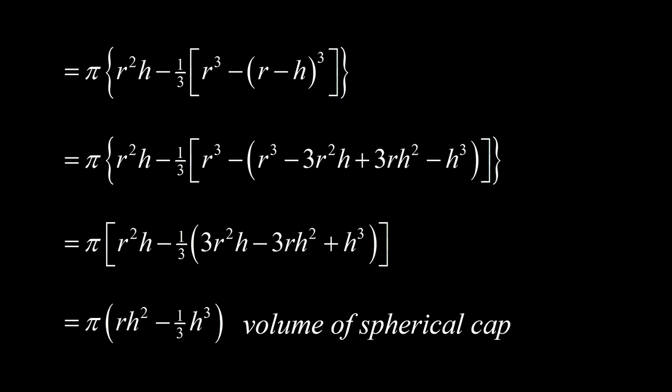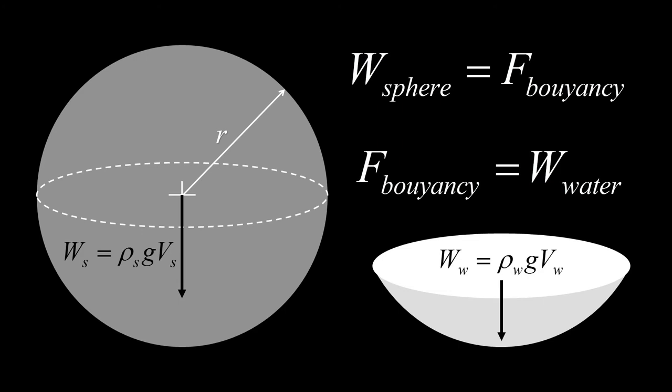Simpli lang ang physics ng buoyancy. Ang force of buoyancy ay equal sa weight of the displaced water na equal naman dapat sa weight ng sphere para hindi ito tuloy ang lumubog. Weight is mass times g and mass is density times volume so we have this equation. From it, we get this. Take note that by definition, specific gravity is the density of something relative to the density of water. Substituting the volume of the spherical cap, which is the part of the sphere submerged in water, which is also equal to the volume of water displaced, and also the volume of the entire sphere, we get this. After some algebra, we get this cubic equation which we will now solve using the Newton-Raphson method.